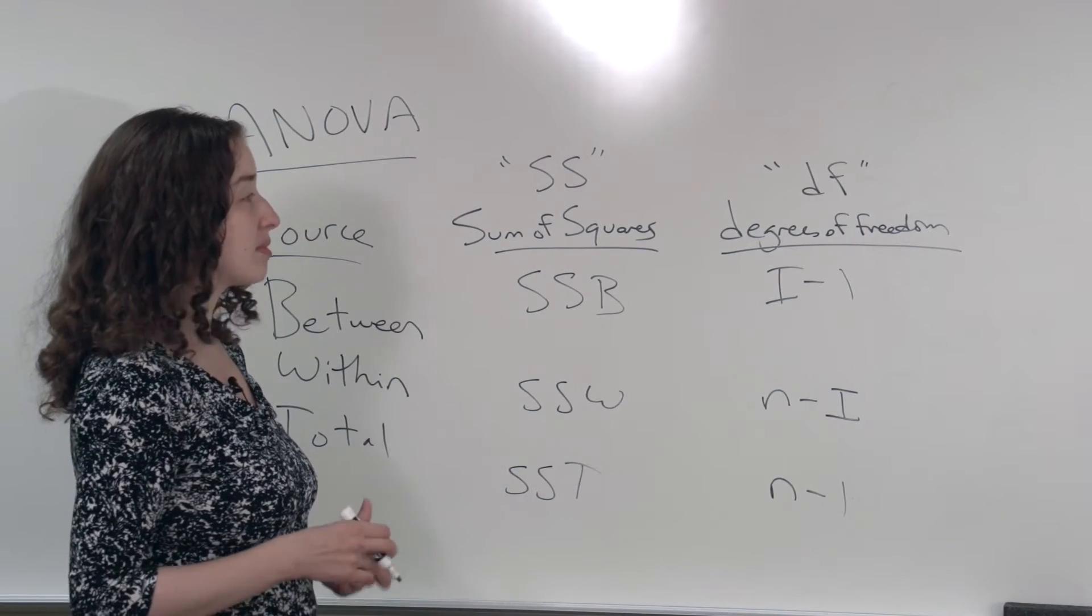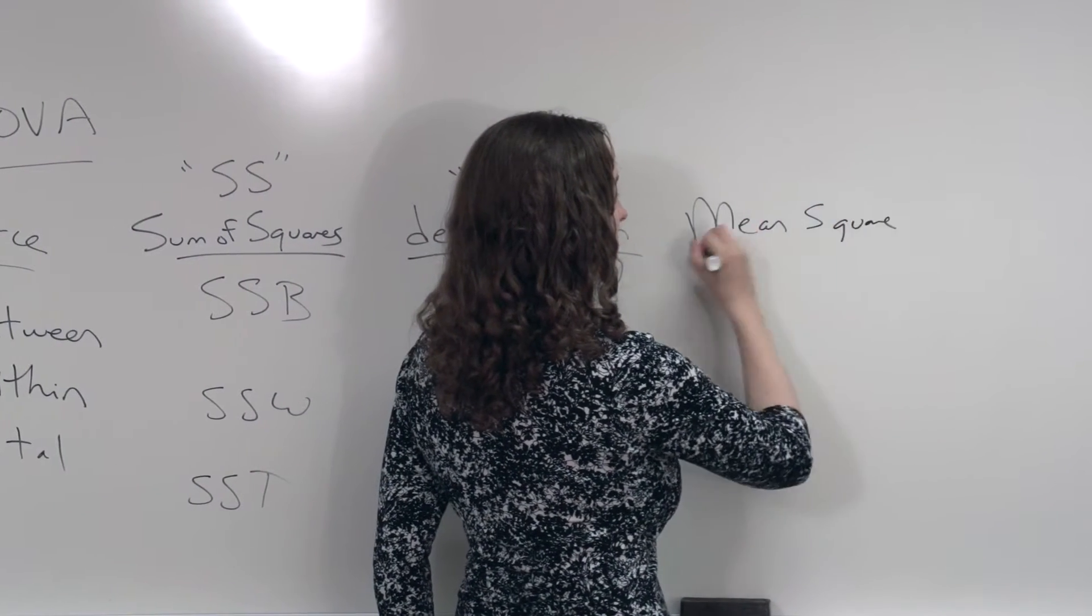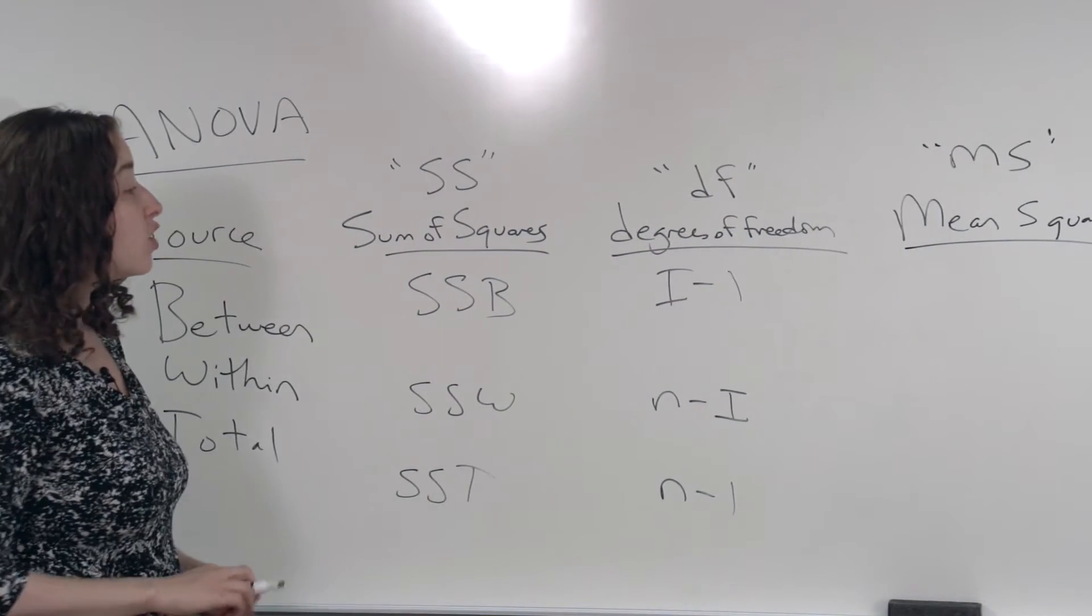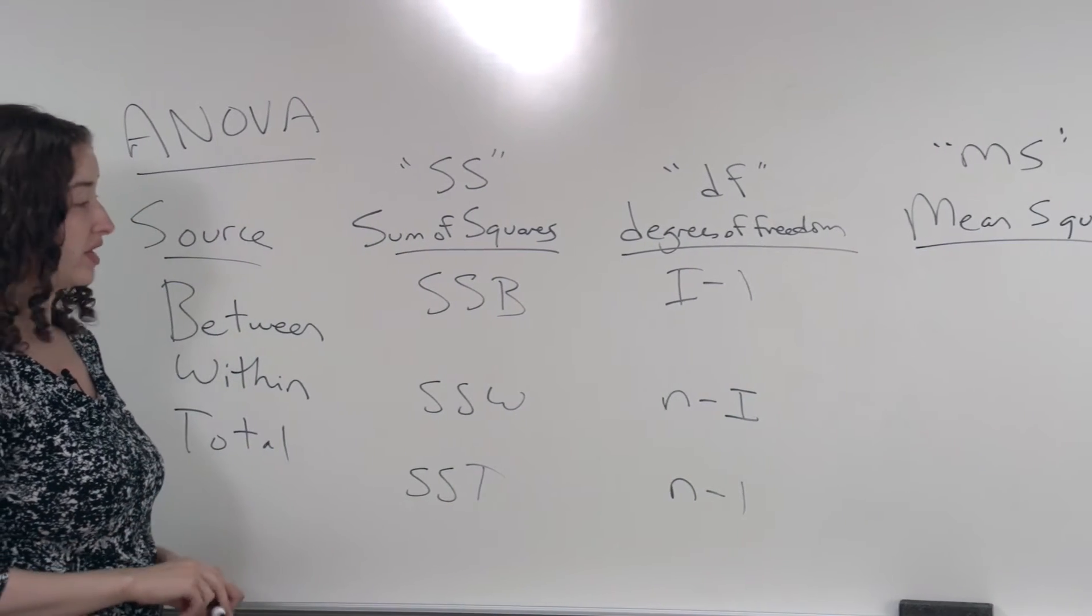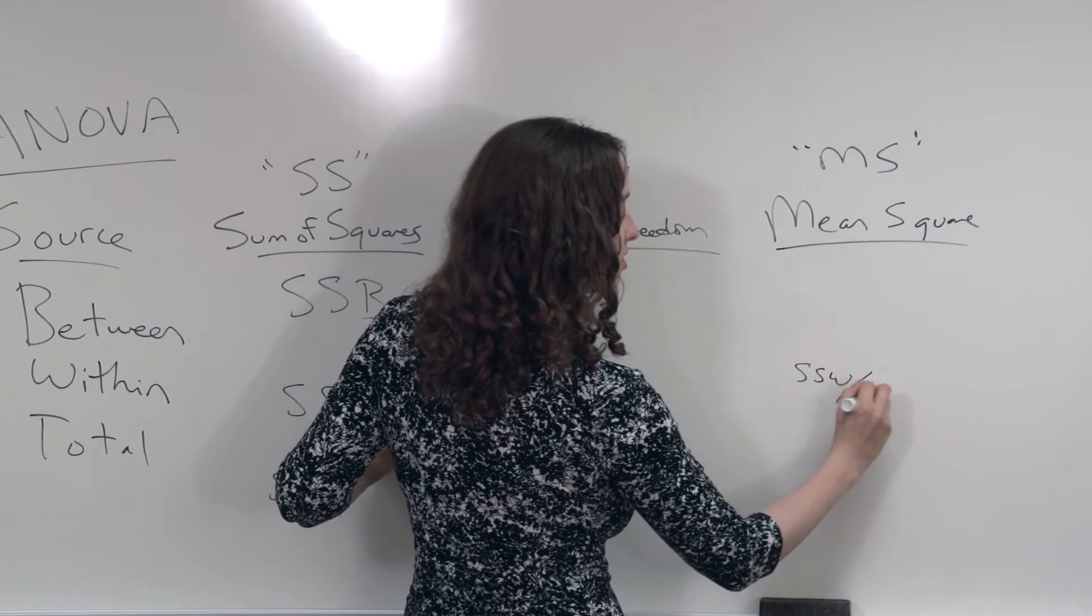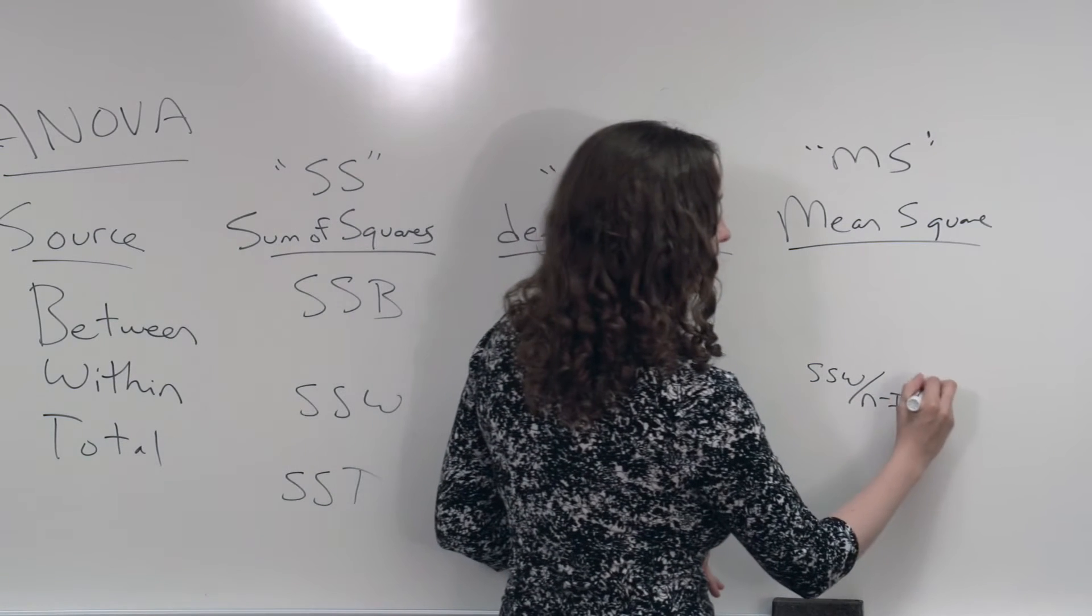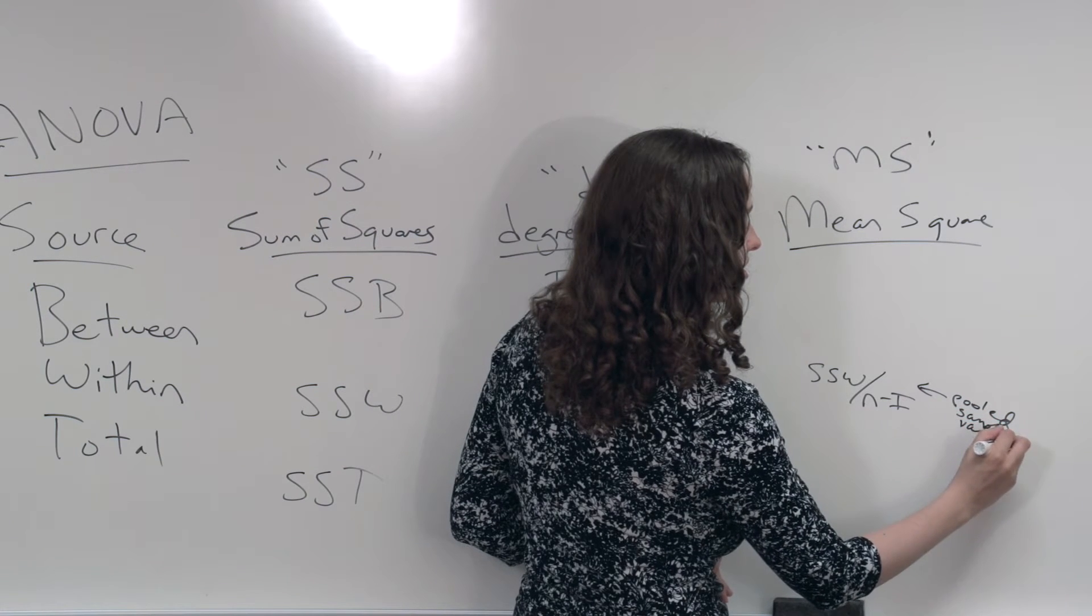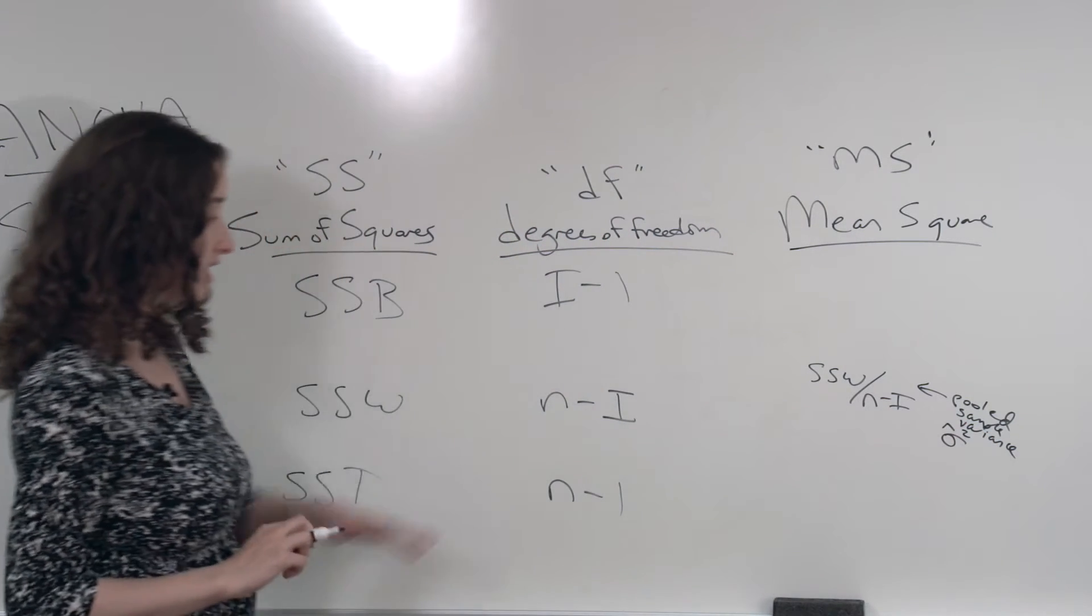What are we going to do next? The next column I'm going to label mean square, often abbreviated MS. How are we going to get that? Well now we're going to literally take each of these quantities in the sum of squares column and divide by the degrees of freedom. If we take SSW divided by n minus i, note that what we have is the pooled sample variance. Another name that we've given to this is sigma hat squared. So that's what that quantity is.